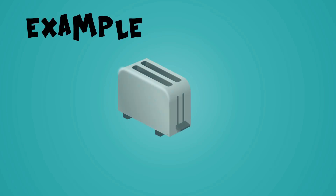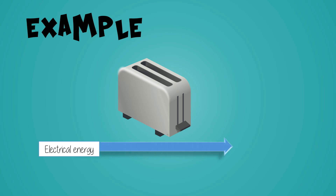Let's use our toaster as an example. The input of energy comes from the electrical energy supplied by the power cord. This then gets transformed into heat energy, which allows our toast to cook. As you can see here, we have the input energy on the end of the arrow, and at the tip of the arrow we have the heat energy, which is the useful output energy.